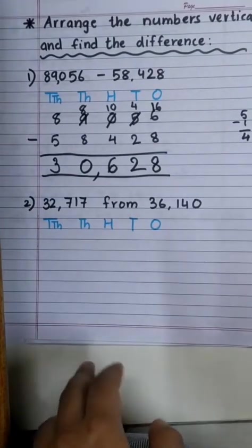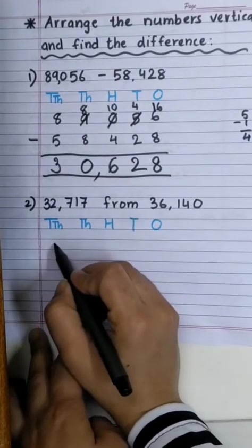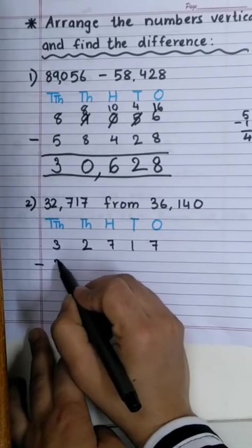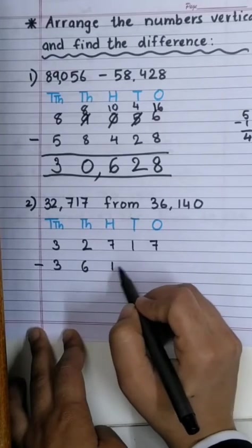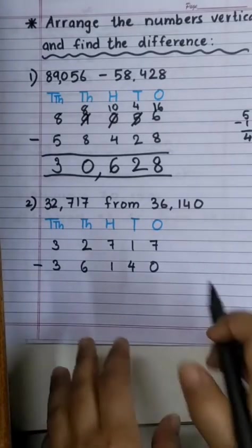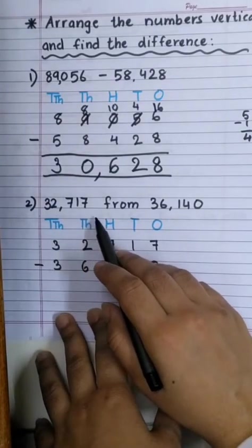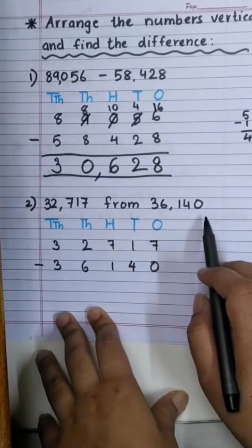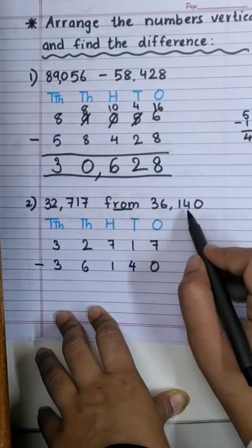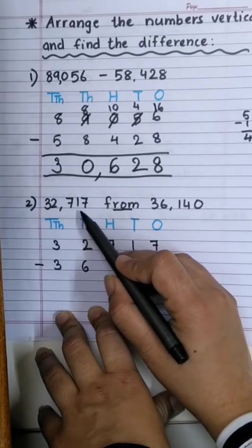Now, let's start with the next one. Arrange the numbers in the proper column. 32,717 minus 36,140. Can you recognize a mistake? Yes! There is a mistake which is commonly made by everyone. Here, the heading says 32,717 from 36,140. When word 'from' is used, we have to arrange this number first. And in the second row, we have to arrange this number. Okay! Will you remember that?